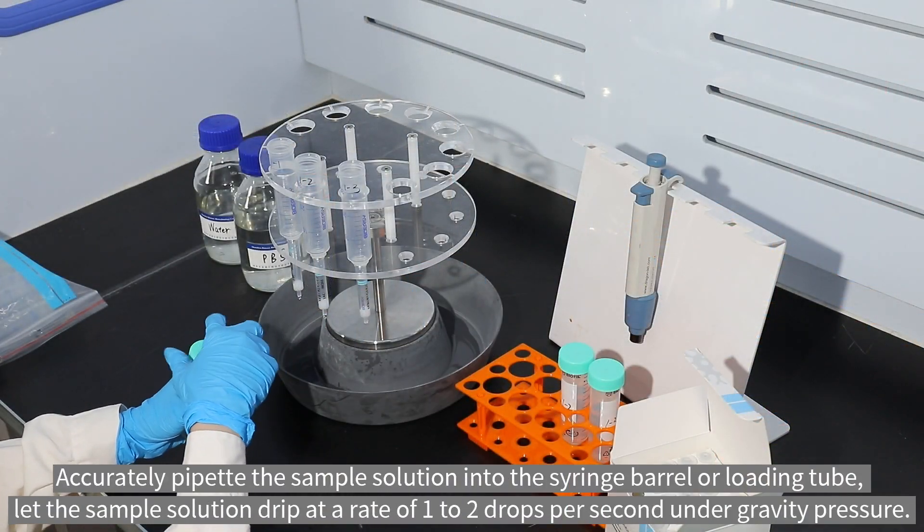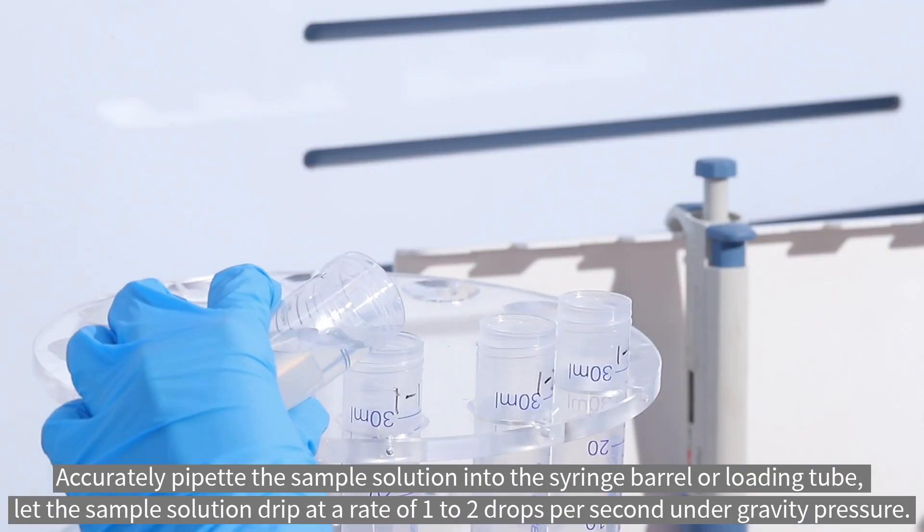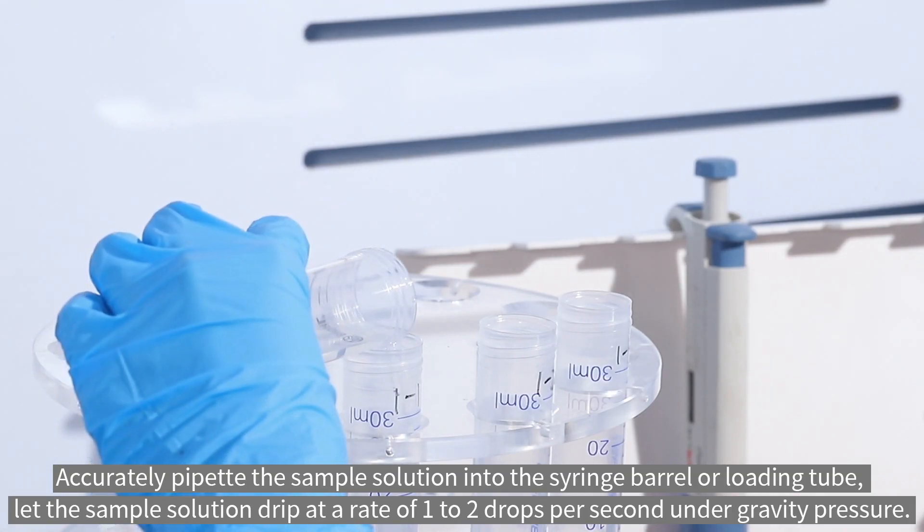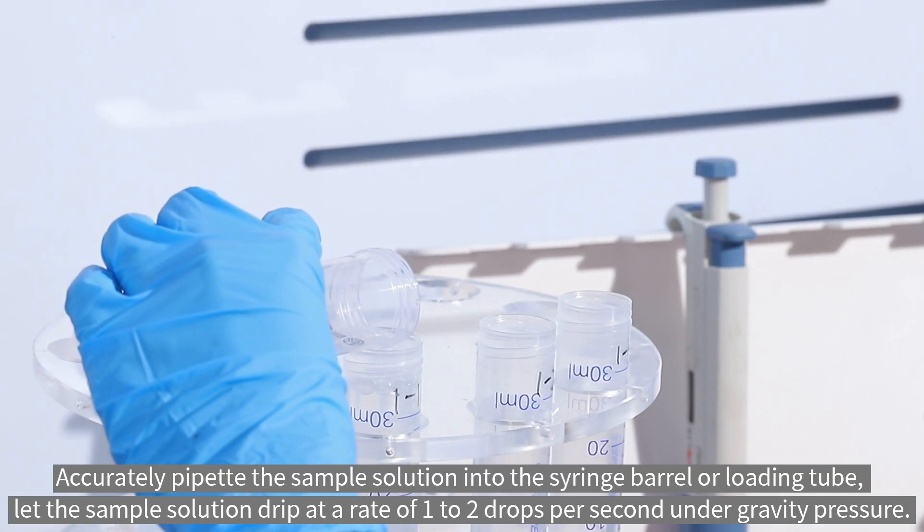Accurately pipette the sample solution into the syringe barrel or loading tube. Let the sample solution drip at a rate of one to two drops per second under gravity pressure.